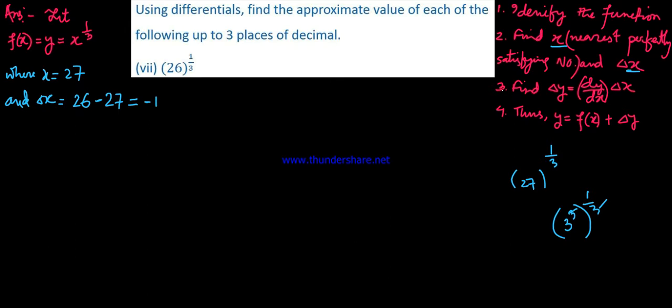Next step is to find delta y. The formula for delta y is dy by dx times delta x. So delta y is approximately equal to dy by dx into delta x. We need dy by dx.